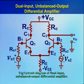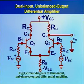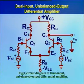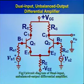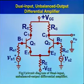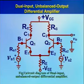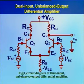Its DC analysis will be carried out by setting the voltage sources VS1 and VS2 to zero. In the DC analysis, we determine the operating point. The DC equivalent circuit of dual input unbalanced output differential amplifier is equivalent to the equivalent circuit of the dual input balanced output differential amplifier — that is, both circuits have the same DC biasing circuits.